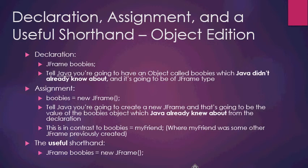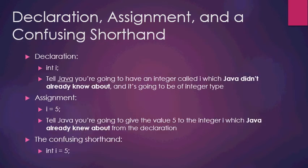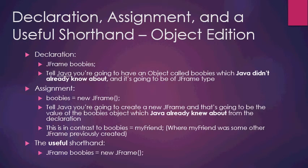The object version works the same way. For declaration, if I say 'JFrame boobies', you're telling Java you're going to have an object called boobies, which Java didn't already know about, and it's going to be of JFrame type. All that's doing is creating that variable and assigning a space in memory — just like with int. It has the exact same syntax: type and variable name.